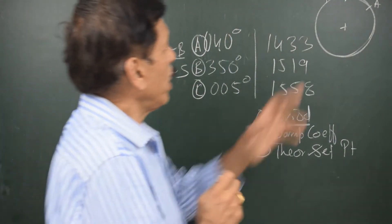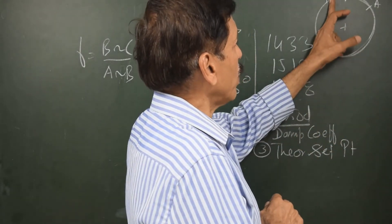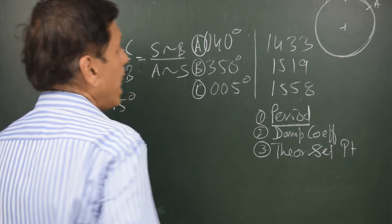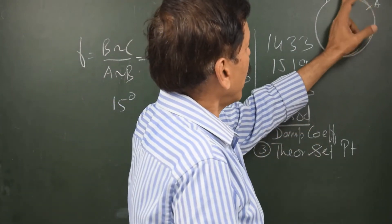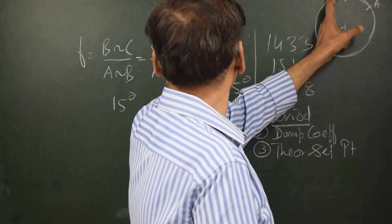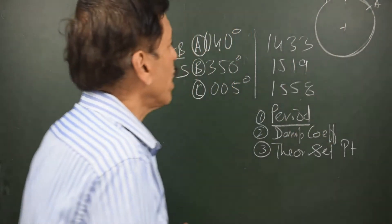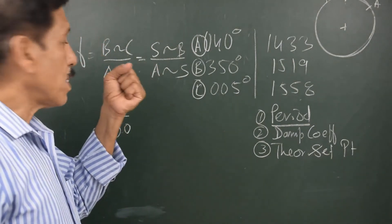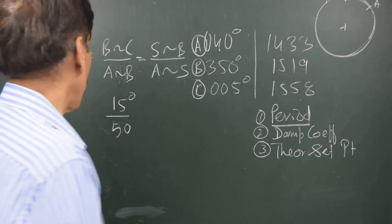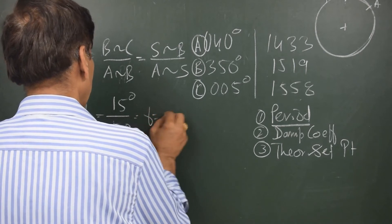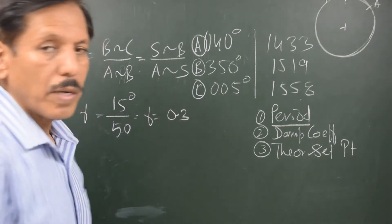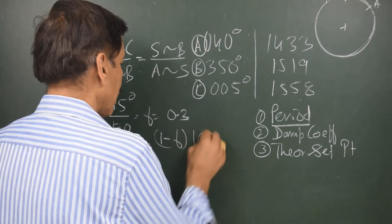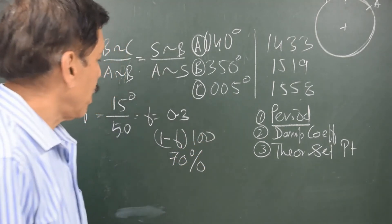So we will find out the difference looking at the compass rose. The B difference C would be from here to here. The B difference C would be from 350 to 005 as read on the compass, so 350 to 005 will be 15 degrees. A difference B is 40, that is from 0 to 40 is 40, and B is 350. So B to A or A to B will be 40 plus 10, that is 50. So B difference C as read on the compass rose divided by A difference B is 15 upon 50, and that is F. Which means the F is equal to 0.3. F is 0.3, this is damping factor. Percent damping is 1 minus F multiplied by 100, so that is 70%. Simple?